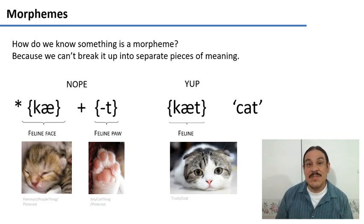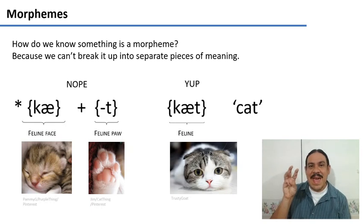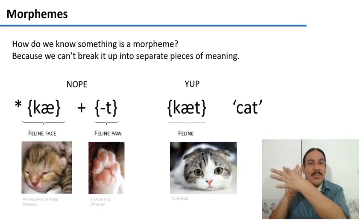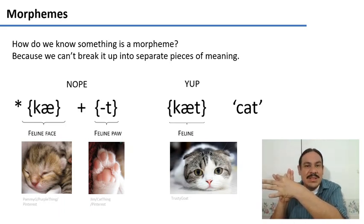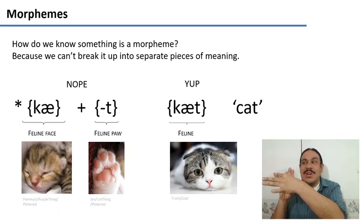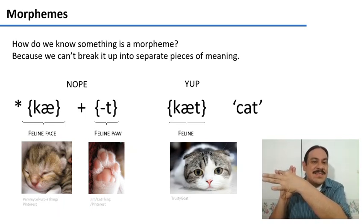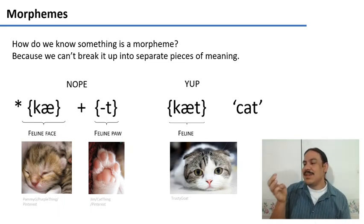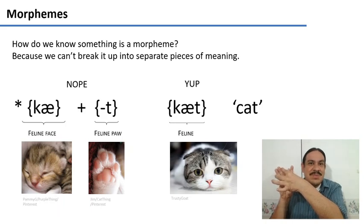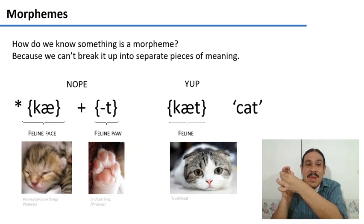How do we know something is a morpheme? Because we cannot break it up any further. If you have the sequence 'cat' and separate the sounds, it no longer means anything related to a cat. The individual sounds don't mean 'face of the cat' or 'paw of the cat' — you need them together for them to mean 'cat.' If you have a unit that means something, and splitting it apart stops it meaning that thing, then you've found a morpheme. It's a minimal bit of meaning.